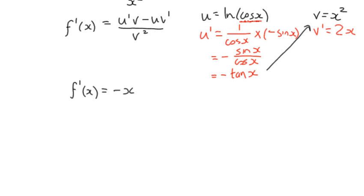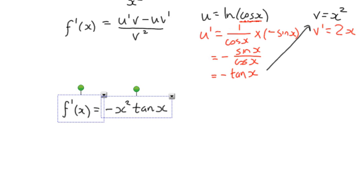That would give you negative x squared tan(x). Minus u v'. u is log of cos(x), and v' is 2x. Now just watch that again, it's a minus sign here.